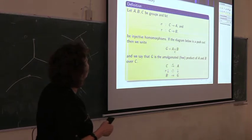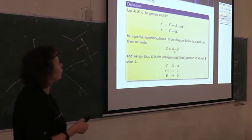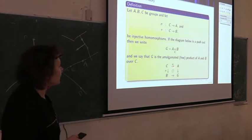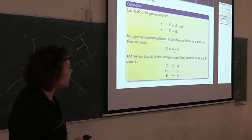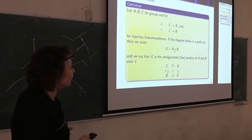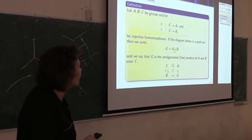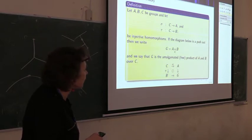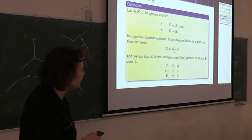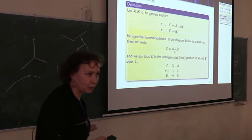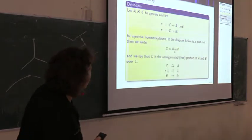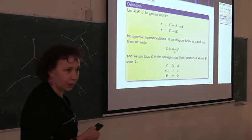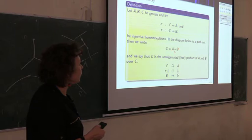We have three groups A, B, and C with injective homomorphisms from C into A and B. If this diagram is a pushout, it means G is the most general completion of this commutative diagram. There are maps from A to G and B to G, and if there are other maps from A and B to some other group making the diagram commutative, there is a unique homomorphism from G into that other group — that's what pushout means. This group G is called the amalgamated product of A and B over C.